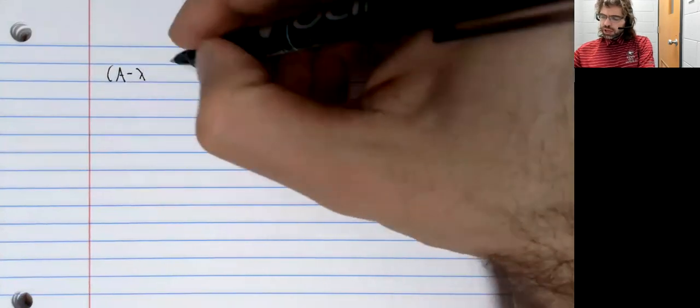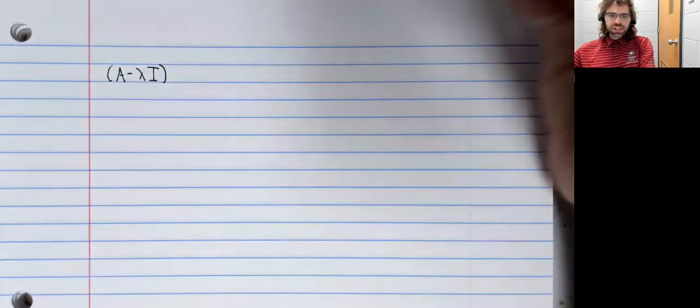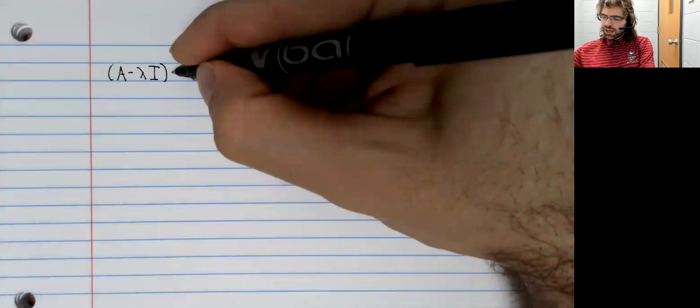Okay, short but important definition. The eigenvalues of a square matrix, we remember, are the values of lambda such that (A - λI) times